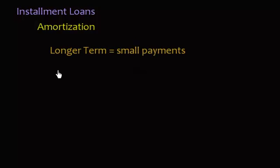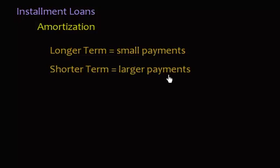You can have a longer-term loan, like a 30-year mortgage or a 15-year mortgage. The longer your term, the smaller your payments, and the shorter the term, the larger the payments. So instead of paying say a thousand dollars per month, you might have to pay seventeen hundred dollars per month. Why would you go with the shorter term if your payments are going to be larger? You can see it fast using what we call an amortization table.